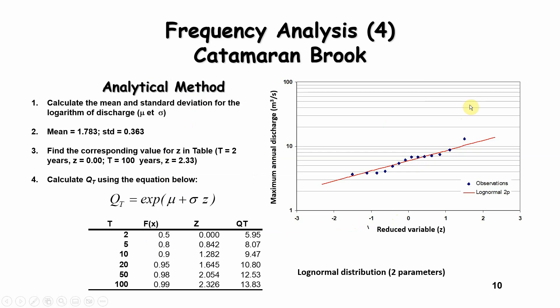There's another way of doing this: you make the calculations rather than doing it graphically. What you need to do is take all of your log transformed data, and calculate the mean and the standard deviation of your log transformed data. In this case, the mean is 1.783, and the standard deviation is 0.363. And you go into the table, as I've mentioned before, to calculate the z values for every recurrence interval that you're looking for.